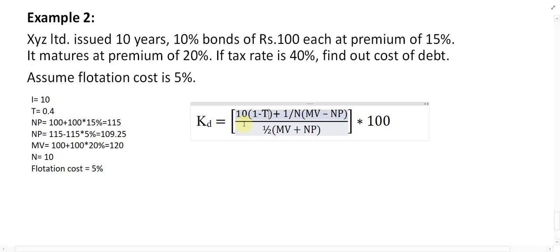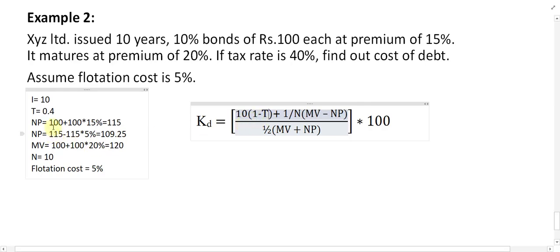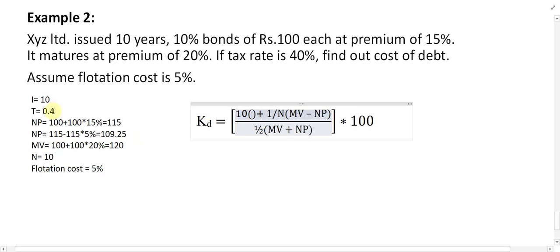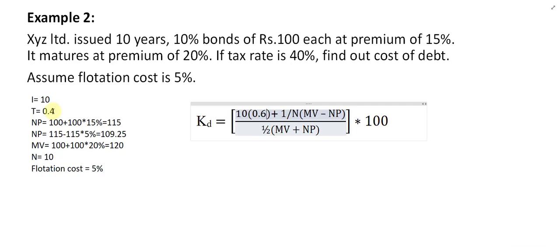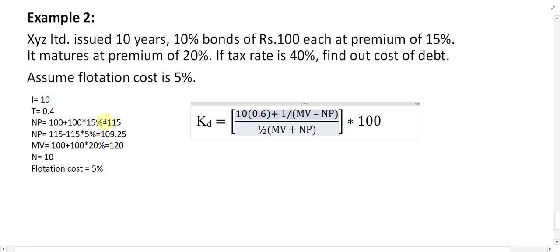1 minus 0.4 equals 0.6, so the after-tax interest is 10 multiplied by 0.6, which equals 6. N is equal to 10.